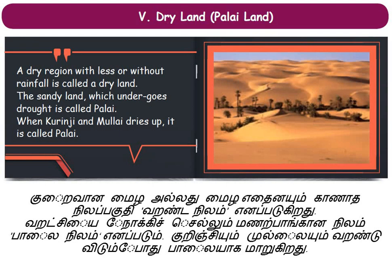The difficult word here is drought, spelled D-R-O-U-G-H-T. Drought means no rainfall at all or very, very little rainfall. The area where there is no rainfall and the sand is very dry, making cultivation impossible, is called Palai land. Palai was formed when the Kuringi and Mullai lands dried up and the sand became very loose.